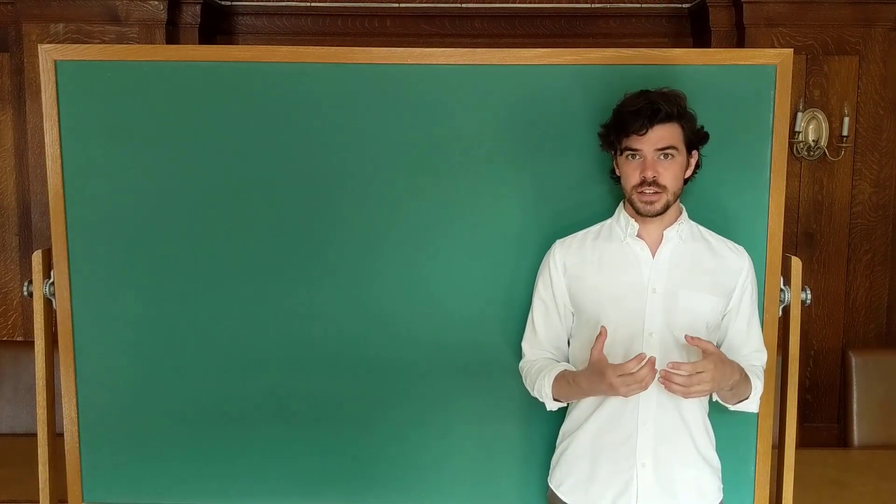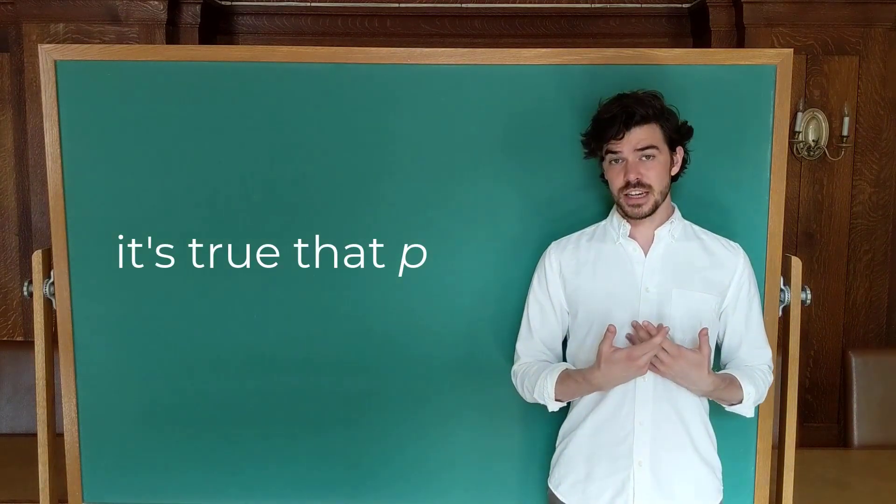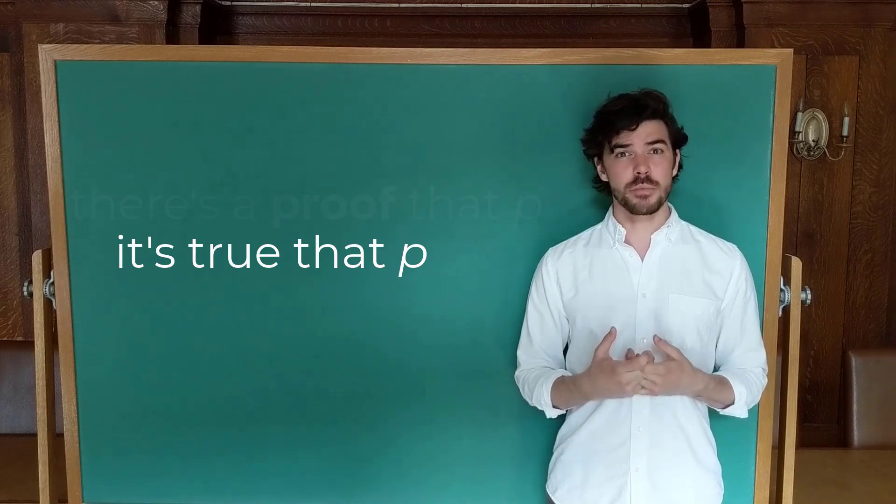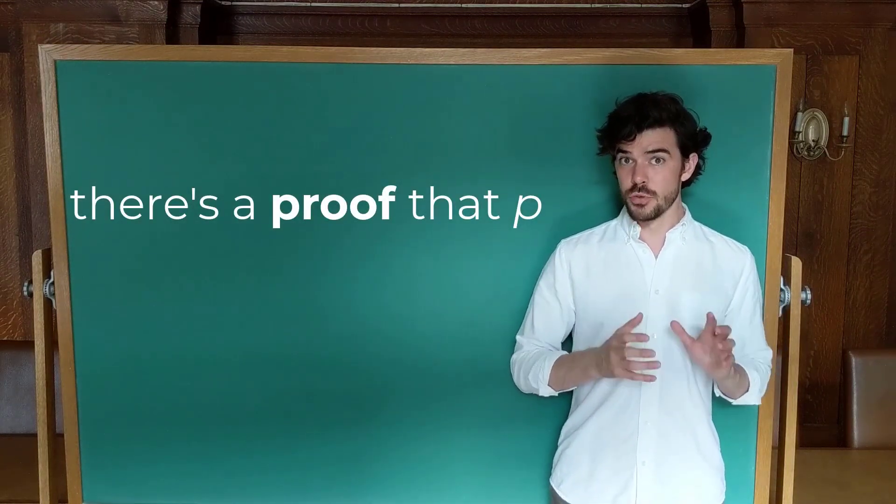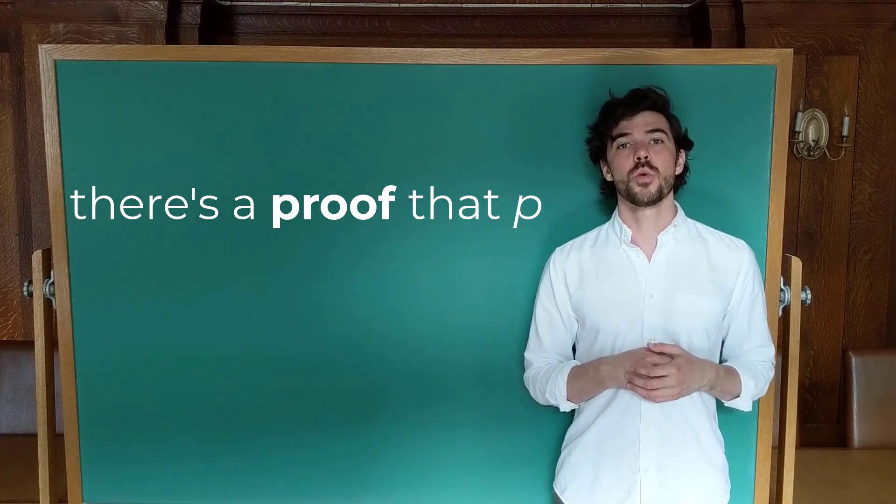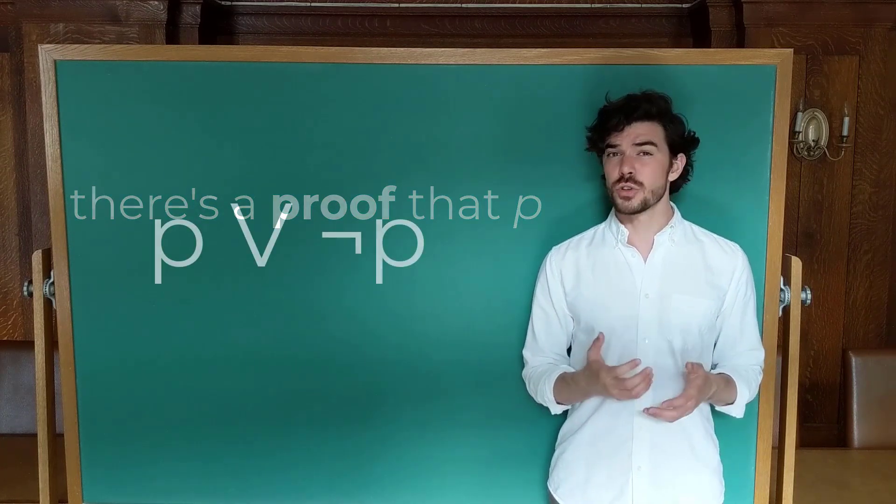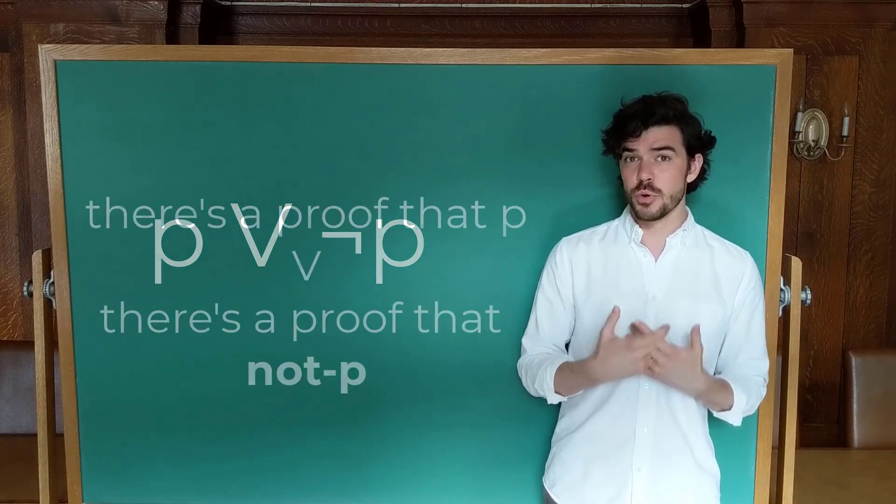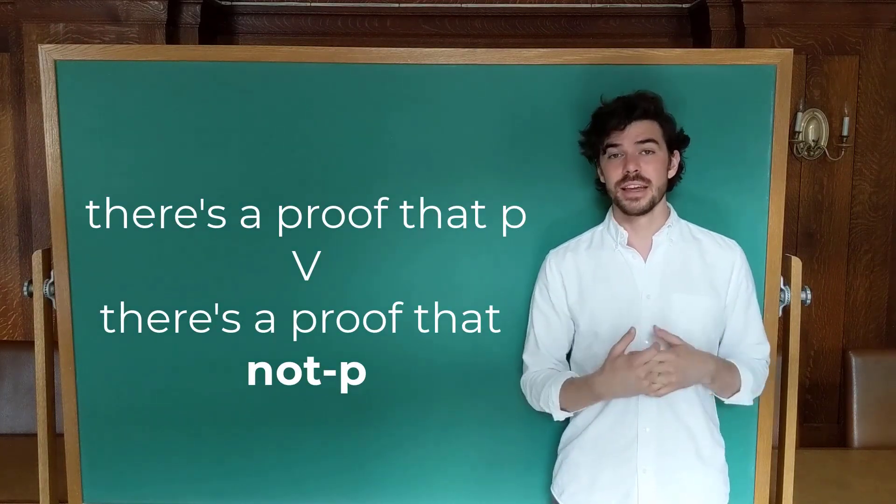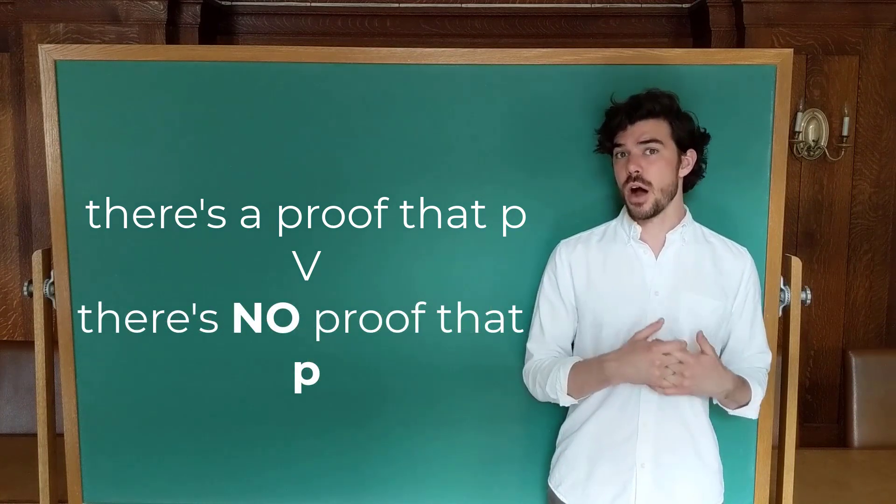One way of reading a sentence like P is just as an assertion, but another way is saying that you have a proof of it. So if we take P in the stronger sense of saying provably P, then we'll wind up in a situation in which excluded middle looks a little weird because it could be read as provably P or provably not P, or provably P or not provably P.